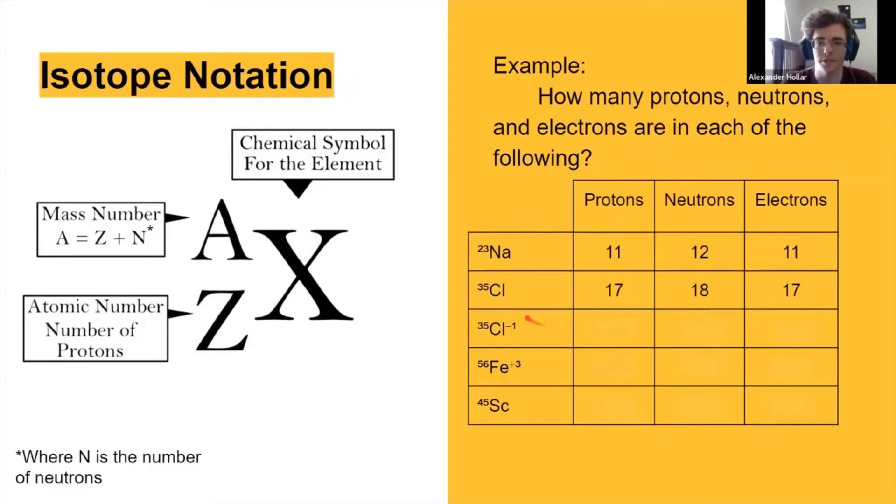Okay, now using that same information, what would this next one be? Just chlorine with a negative one charge. Would you add that negative one charge instead of subtracting? What do you mean by add it instead of subtracting it? Adding it to what? For the electron, for that one.